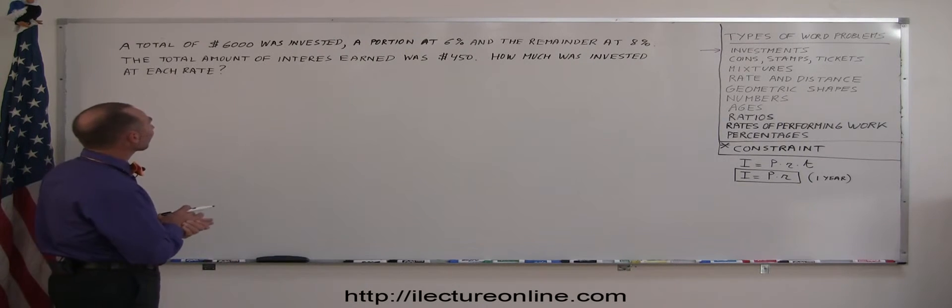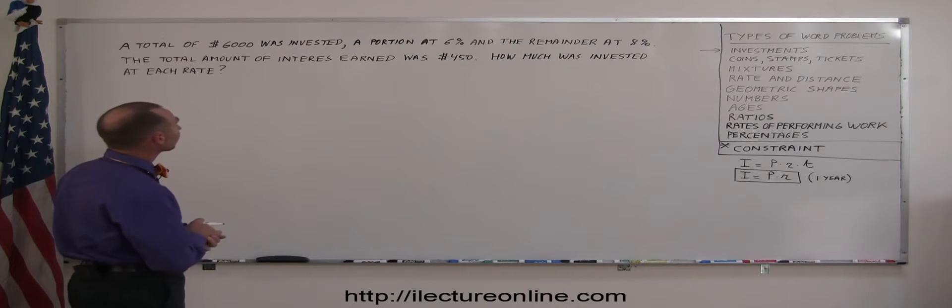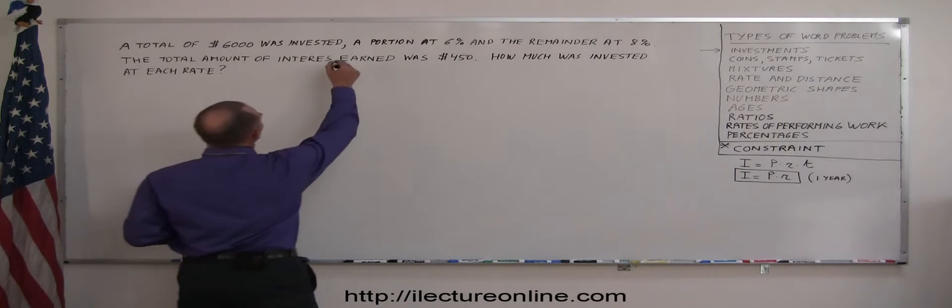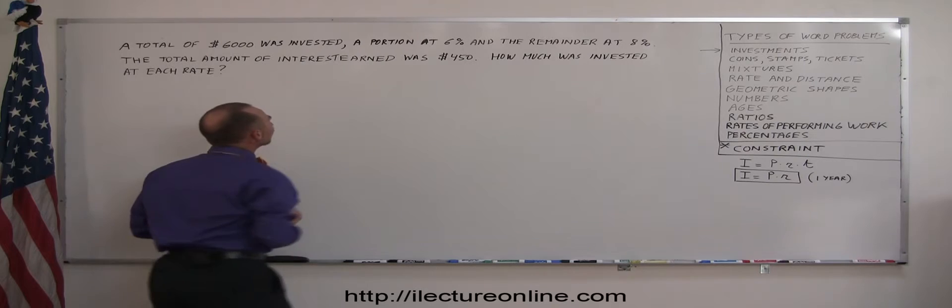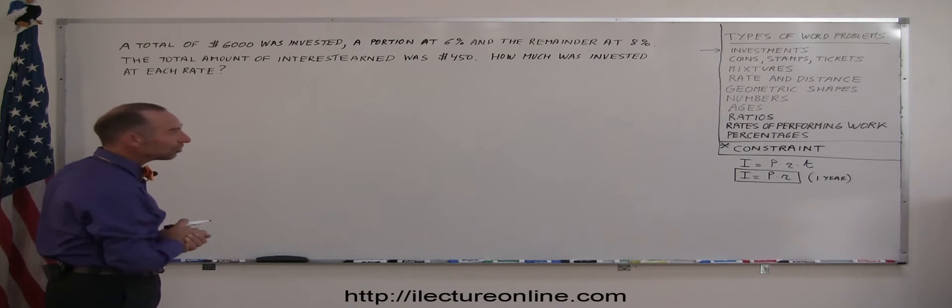A total of $6,000 was invested, a portion at 6%, and the remainder at 8%. The total amount of interest earned—oh, I'm missing a T right here, so let me put that in there—interest earned was $450. How much was invested at each rate?